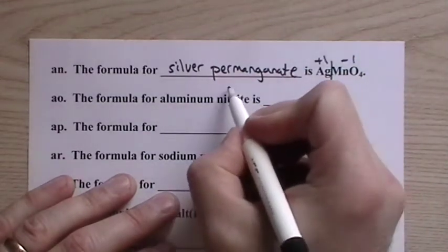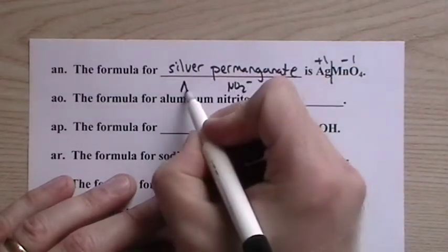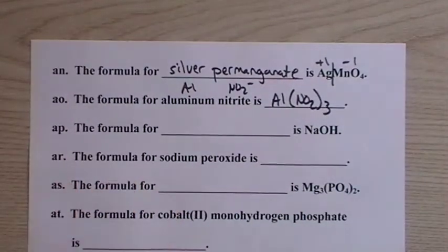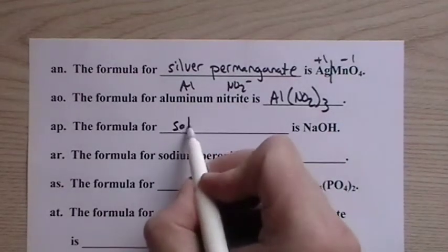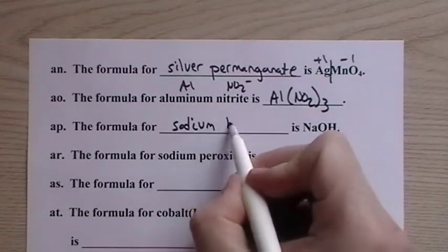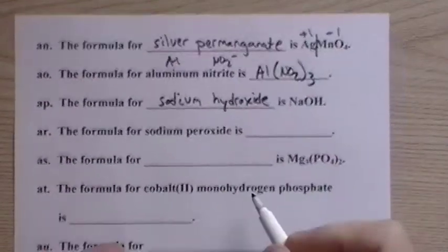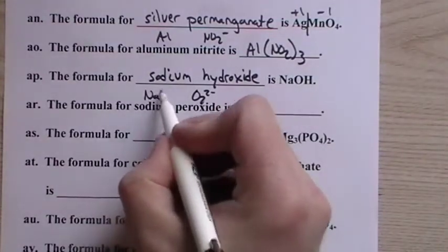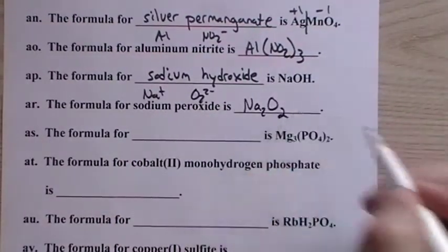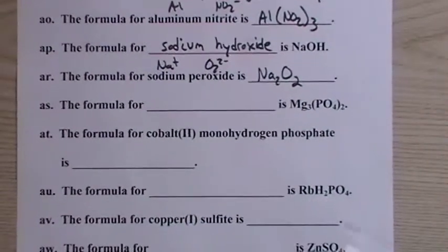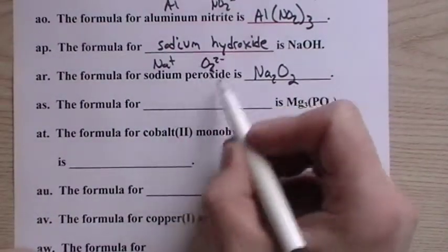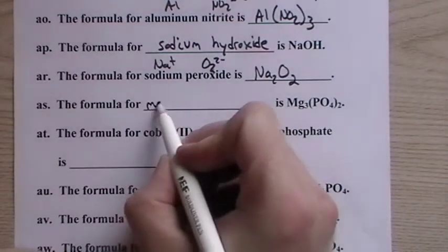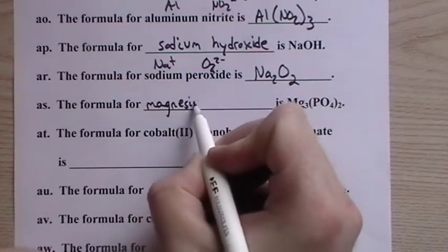The formula for aluminum nitrite, NO2 minus. This is aluminum, so Al(NO2)3. Formula for, this is sodium. That OH is hydroxide, it's a polyatomic ion, hydroxide. Sodium peroxide. Peroxide is O2 2 minus. So sodium is plus 1, so we'll have Na2O2. That's one where oxygen is actually a minus 1, but there's two of them together to form the peroxide ion, a polyatomic ion. This is magnesium phosphate.